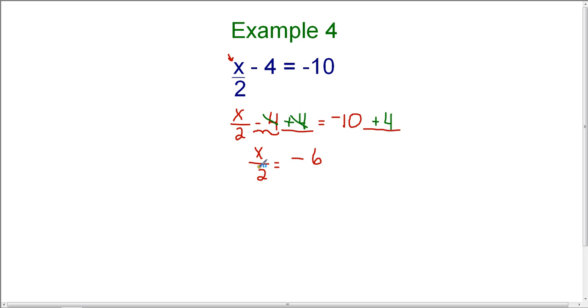Now, I have only the 2 to worry about and to get rid of. So now, I need to ask myself, how am I going to get rid of the 2? This is x divided by 2, and again, I want to use opposite operations. So the opposite of divide is to multiply. Therefore, I'm going to multiply by 2 on both sides.